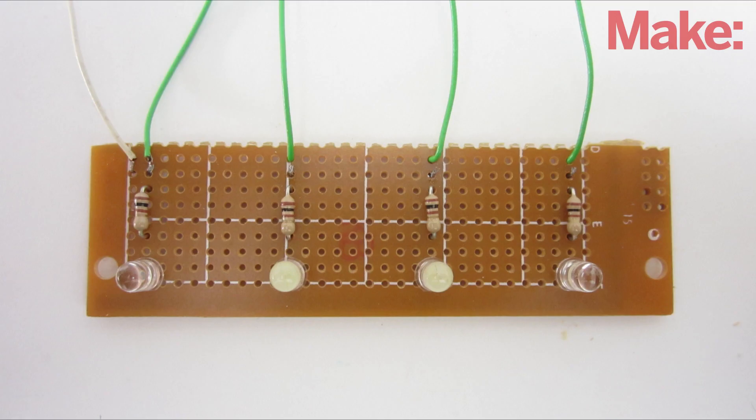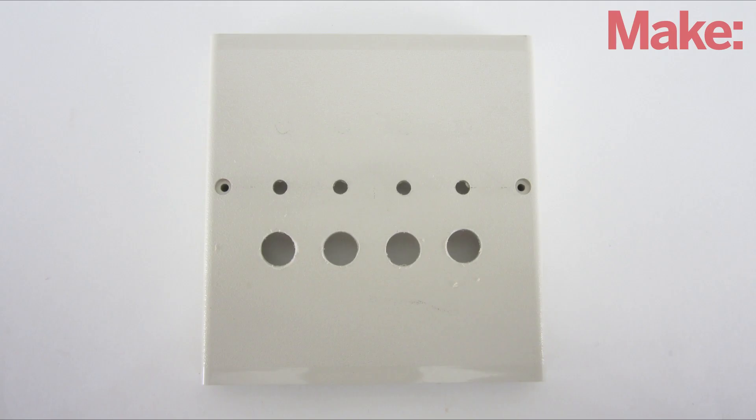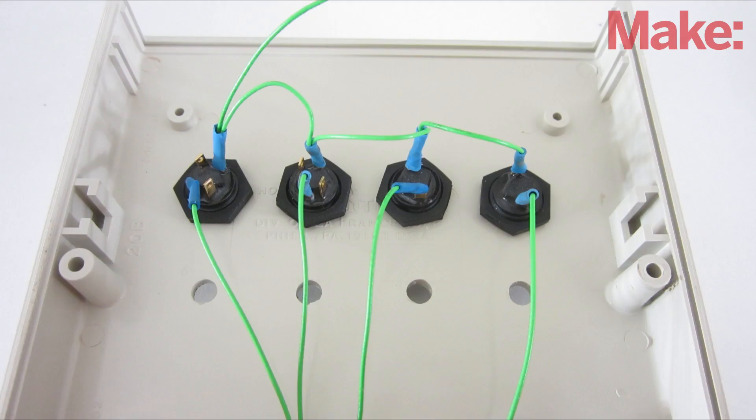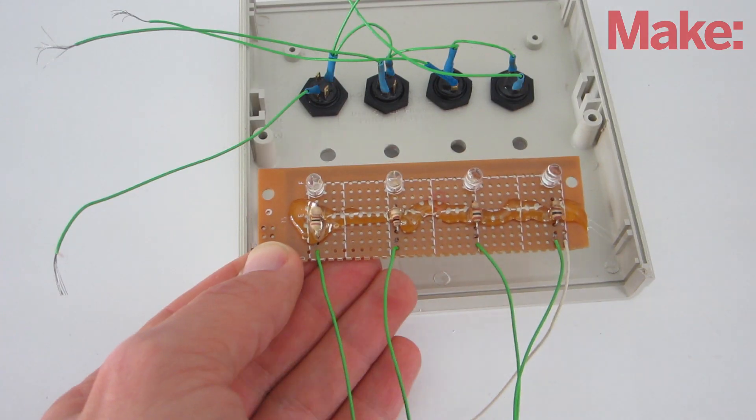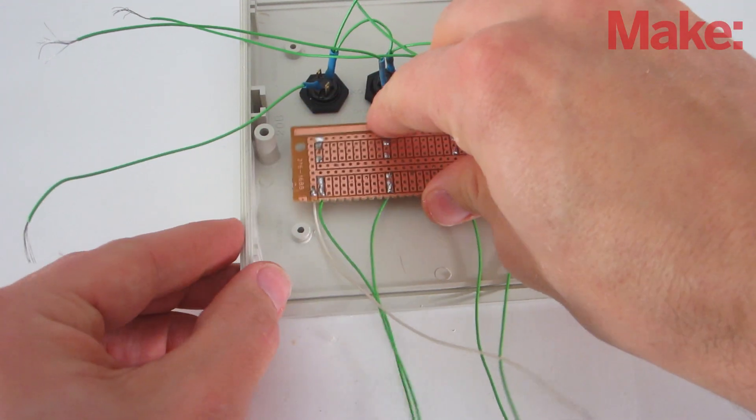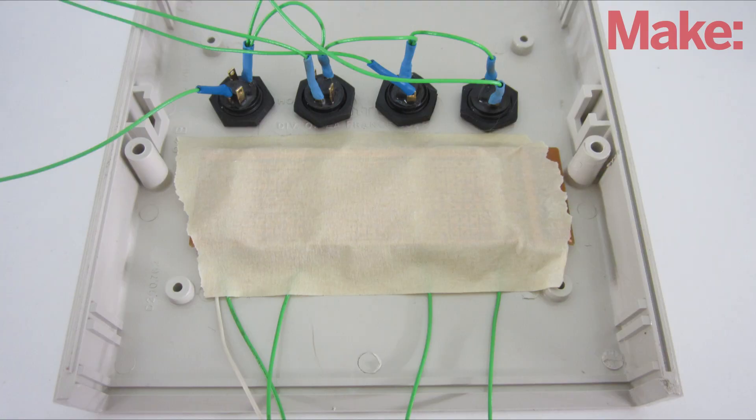To mount the LEDs and resistors, I soldered them onto a small printed circuit board. Then I drilled holes in the top of the housing for the LEDs and the buttons. The buttons are held in place with their own mounting fasteners. The circuit board is held in place with a thick stripe of hot glue. Then I put a piece of tape on top to help insulate the board.